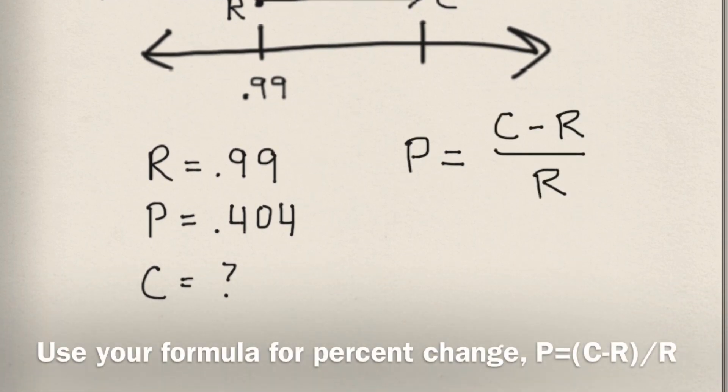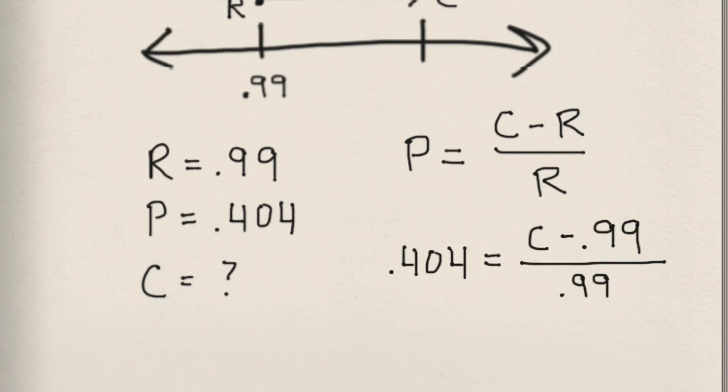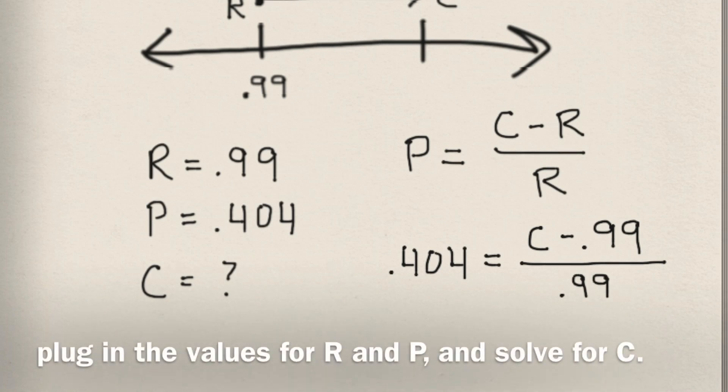Use your formula for percent change, p equals the quantity c minus r all over r. Plug in the values for r and p, and solve for c.